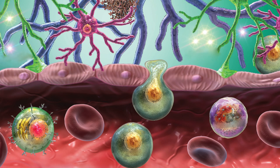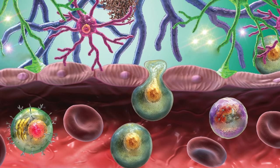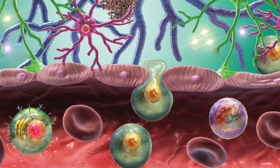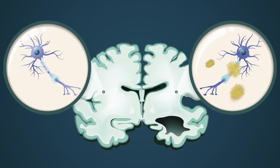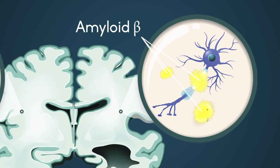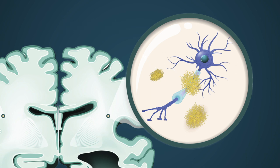There is increasing evidence that changes to the function and activation of microglia play an important role in many neurodegenerative disorders, including Alzheimer's disease. Amyloid beta, a major component of amyloid plaques, is involved in the induction of inflammatory response and/or phagocytic activity by microglia.